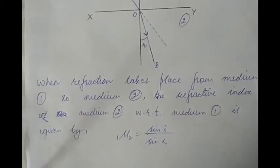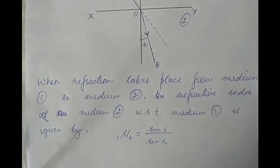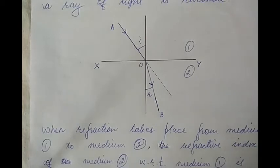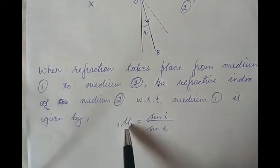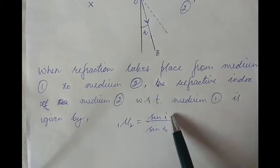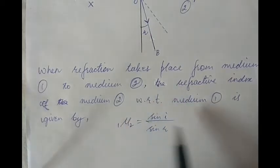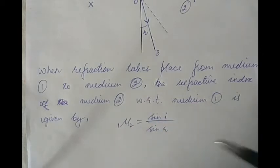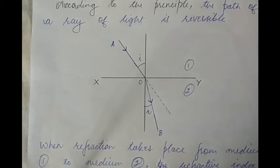When refraction takes place from medium 1 to medium 2, the refractive index of medium 2 with respect to medium 1 is given by μ₂₁, which is equal to sine of angle of incidence divided by the sine of angle of refraction, from Snell's law. Consider this our equation 1, which is the case when refraction takes place from medium 1 to medium 2.